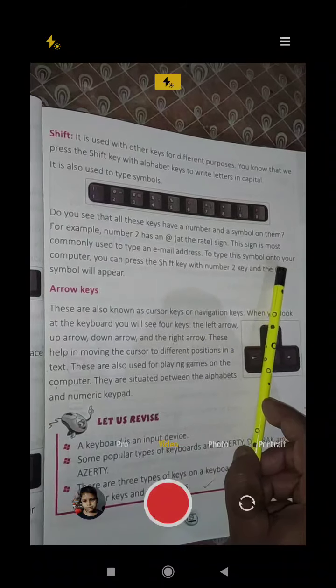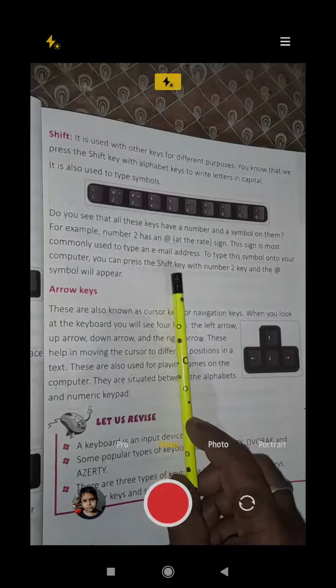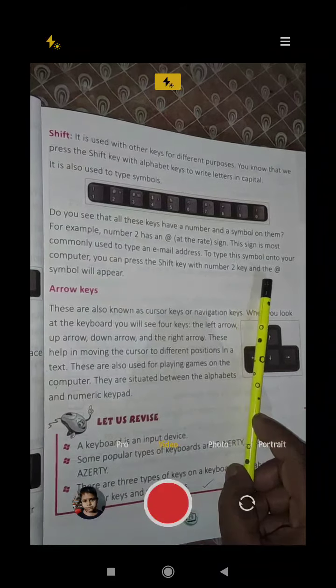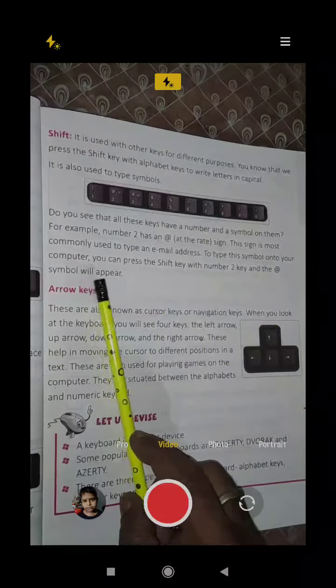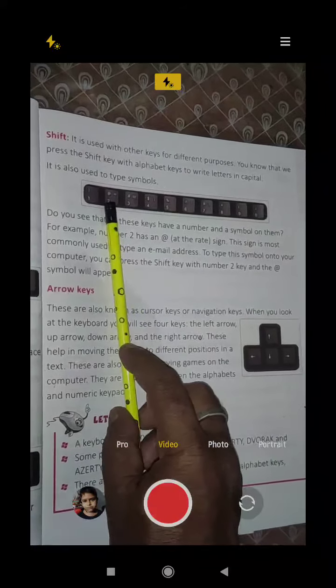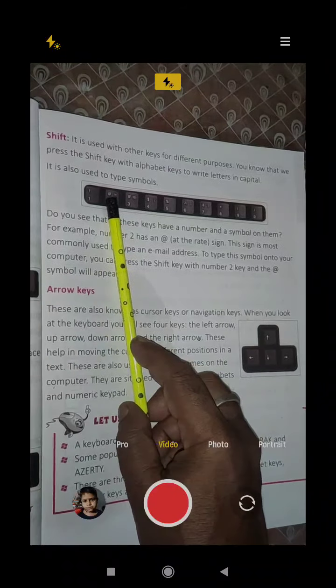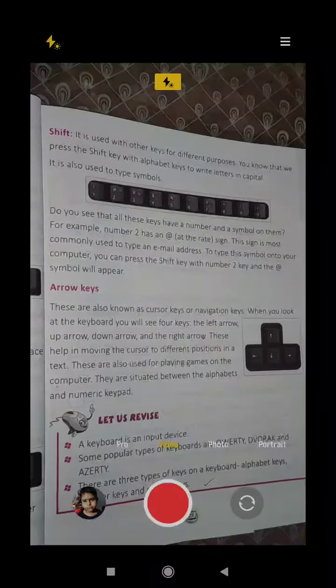To type the symbol onto your computer, you can press the shift key with number keys. Press number 2 key with shift and the at the rate symbol will appear. If you press the key without shift, then the number 2 types.